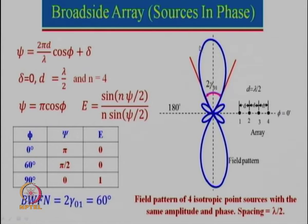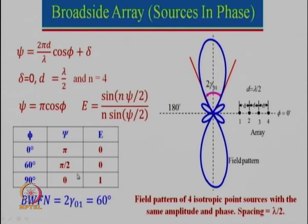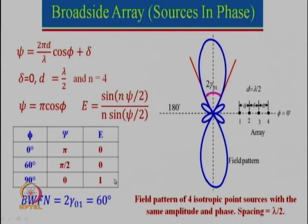We can evaluate at specific angles: at φ=0°, cosφ=1 so ψ=π, and with N=4 the array factor becomes 0. At φ=60°, cosφ=1/2 so ψ=π/2; substituting into the array factor with N=4 gives sin(4·π/4) / 4·sin(π/4) — the numerator sin(π)=0, so the array factor is again 0. At φ=90° (broadside), cosφ=0 so ψ=0 and the normalized array factor equals 1.